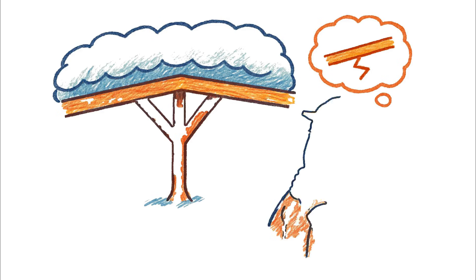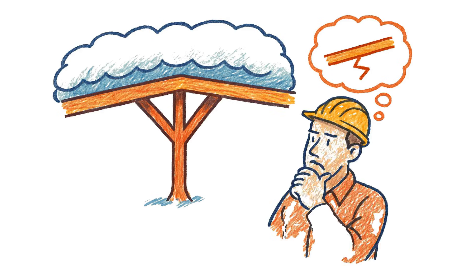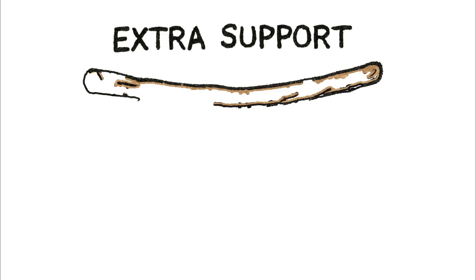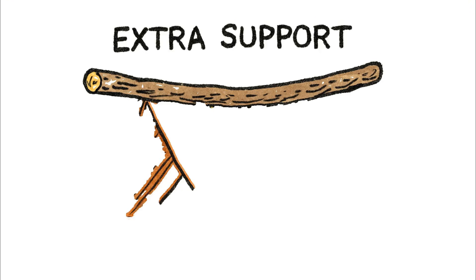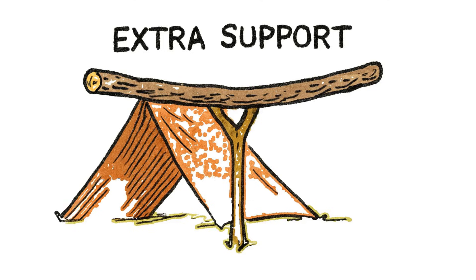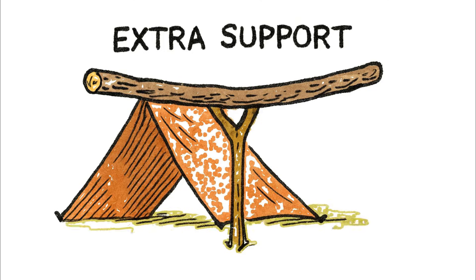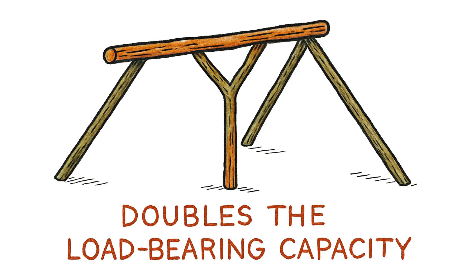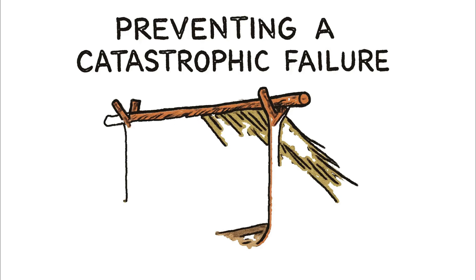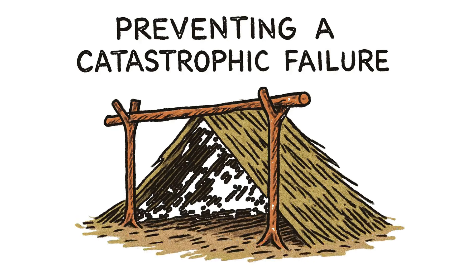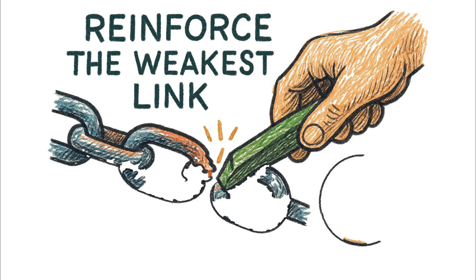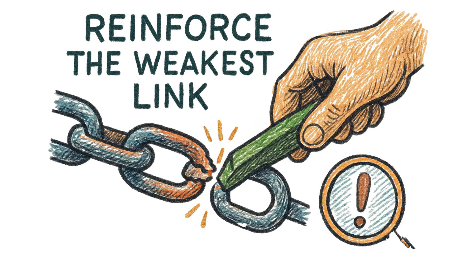An engineer anticipates this failure mode and adds a safety factor — in this case, placing an extra Y-stick support column directly under the center of the span. This one simple addition can double the load-bearing capacity of the ridge pole, preventing catastrophic failure when you need the shelter most. It's about identifying the weakest link and reinforcing it before it's ever tested.